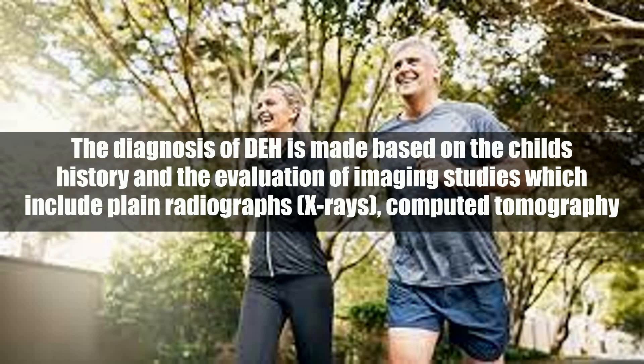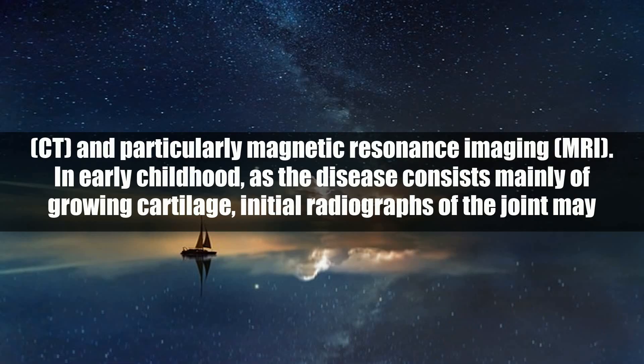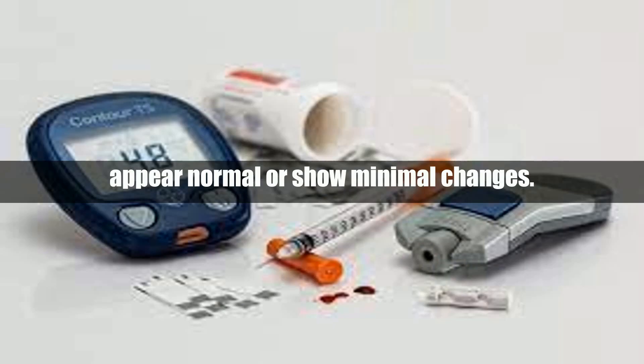The diagnosis of DEH is made based on the child's history and the evaluation of imaging studies, which include plain radiographs, X-rays, computed tomography, and particularly magnetic resonance imaging, MRI. In early childhood, as the disease consists mainly of growing cartilage, initial radiographs of the joint may appear normal or show minimal changes.